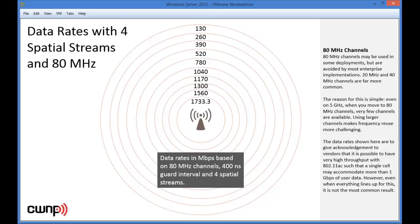The reality is that 20 and 40 MHz channels are far more common. The reason is simple: if you implement an 80 MHz channel, you have far fewer total channels available even in 5 GHz, so frequency reuse becomes very challenging. This is acknowledgement to vendors saying you need more than a 1 Gbps uplink — it is possible to have very high throughput, but everything has to line up, and it is an extremely rare result in the real world.